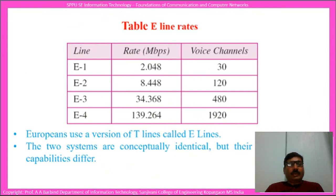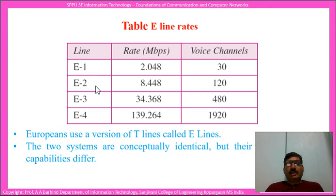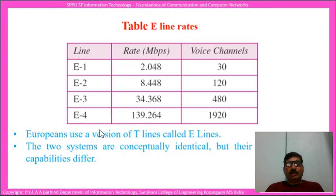Europe uses a version of T-lines called E-lines. The E1 line has a data rate of 2.048 Mbps with 30 voice channels, while E2 has 8.448 Mbps with 120 voice channels. E2 consists of 4 E1 lines, E3 consists of 4 E2 lines, and E4 is a multiple of E3.